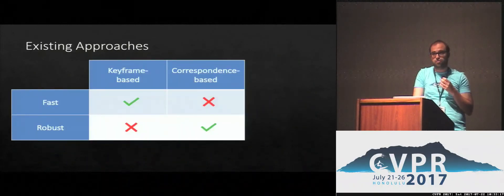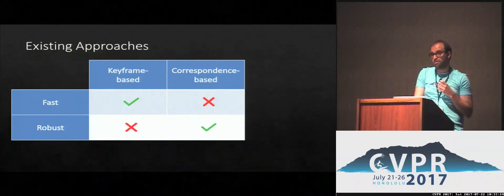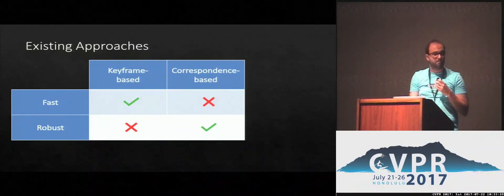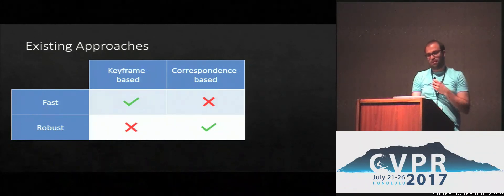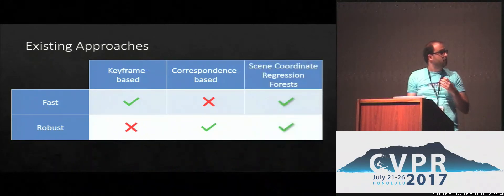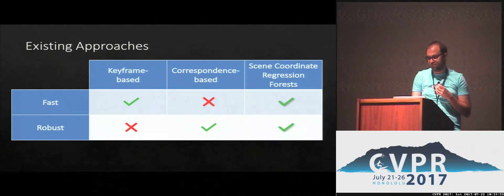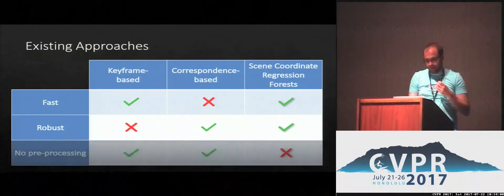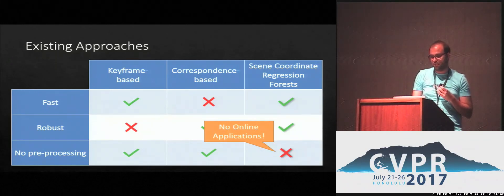Here is our contribution. There are basically two families of relocalizers. One is based on matching images or keyframes — these methods are generally very fast but not extremely robust. The other family is based on establishing image-to-scene correspondences and then computing the pose of the camera geometrically — these methods are more robust but not as fast. Recently, a new subfamily of correspondence-based methods appeared called scene-coordinate regression forests, or SCORE forests for short. These new methods are both fast to evaluate and robust, but they require an expensive offline pre-processing, which prevents their use in online systems.